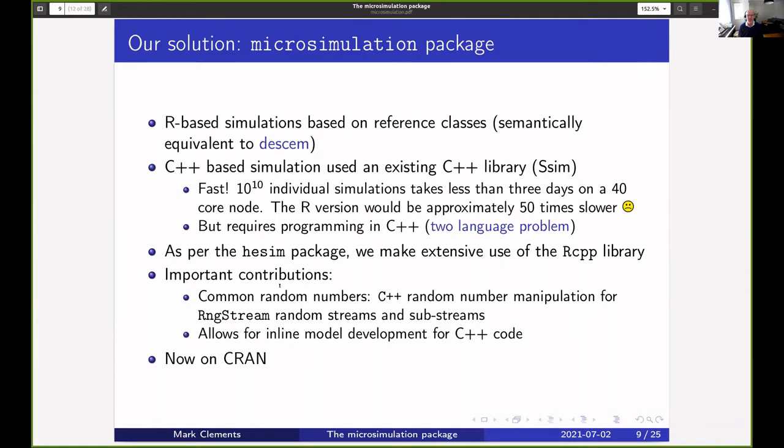We also wanted some tools for doing HTA and we made a preference for a GPL license. Our solution was to develop a package with R-based sims based on reference classes, and I'll show you an example of that. It's also semantically equivalent to discrensim but looks a bit different in syntax. We also have a C++ engine based on an established library. For doing 10^10 sims it takes about four days on a 40-core node, and our version is about 50 times slower, but this does require programming in C++.